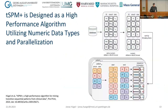That's why we implemented it in C++ and added additional features. This new implementation is called TSPM Plus and is designed as a high-performance algorithm, really utilizing numeric data types and parallelization to gain a massive speed-up, enabling new use cases. We again extract our data from the database in the same format: patient ID, records called phenotypes, and corresponding dates.